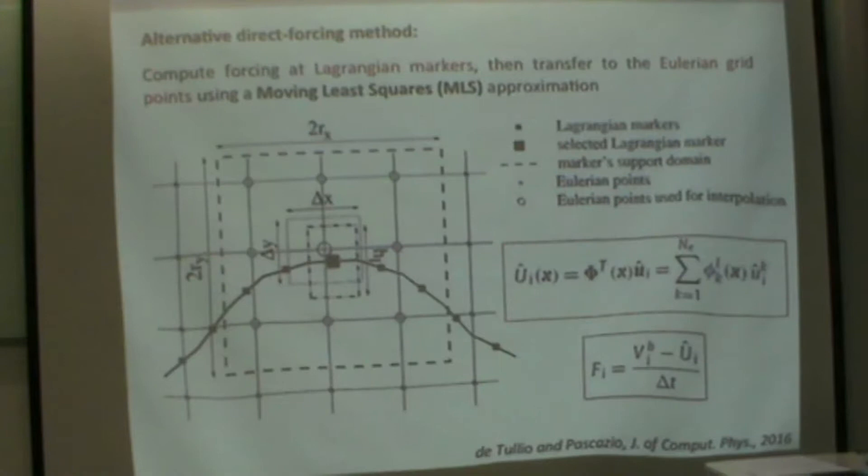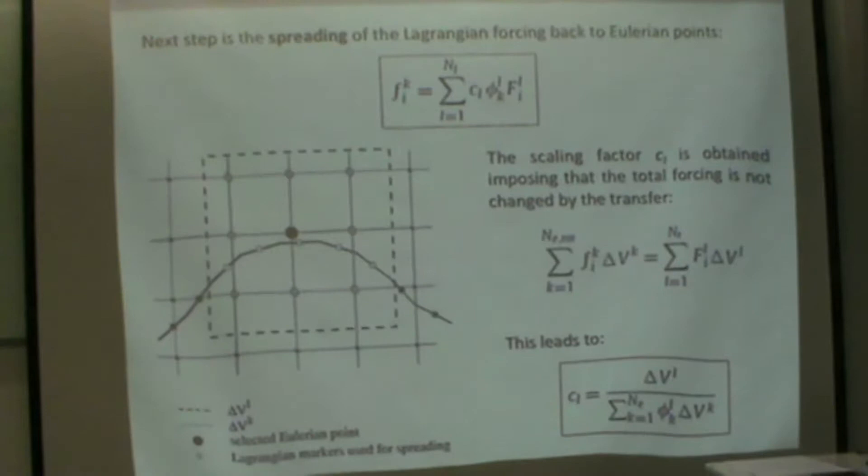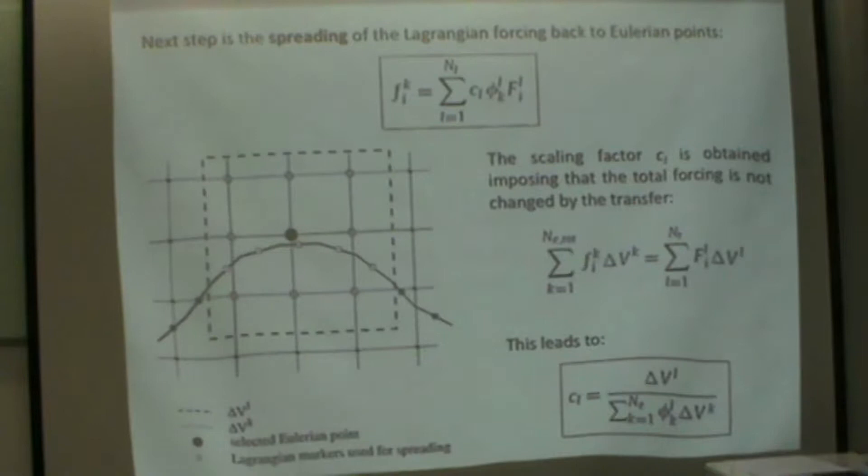We need to spread this Lagrangian force back to the Eulerian points. What we do is spread these Lagrangian forces, obtaining the Eulerian forces on these nodes using the same phi coefficients, scaled with this CL coefficient that ensures the total forcing is the same considering both meshes. We evaluate the forcing by imposing that the total forcing on the Eulerian volume equals the Lagrangian force, considering the height of the body as a layer comparable to the Eulerian grid size.